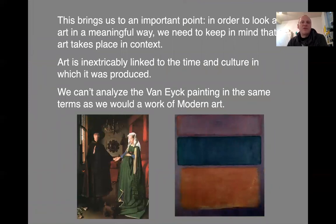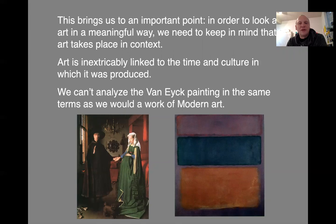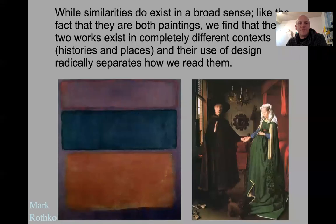This brings us to an important point: in order to look at art in a meaningful way, we've got to keep in mind that art takes place in context — it's inextricably linked to the time and culture in which it was produced. We can't analyze the Van Eyck painting in the same terms we'd use for modern art. They may be similar in form — they're both paintings — but they completely exist in different contexts, different histories and places, and their use of design radically separates how we read them.